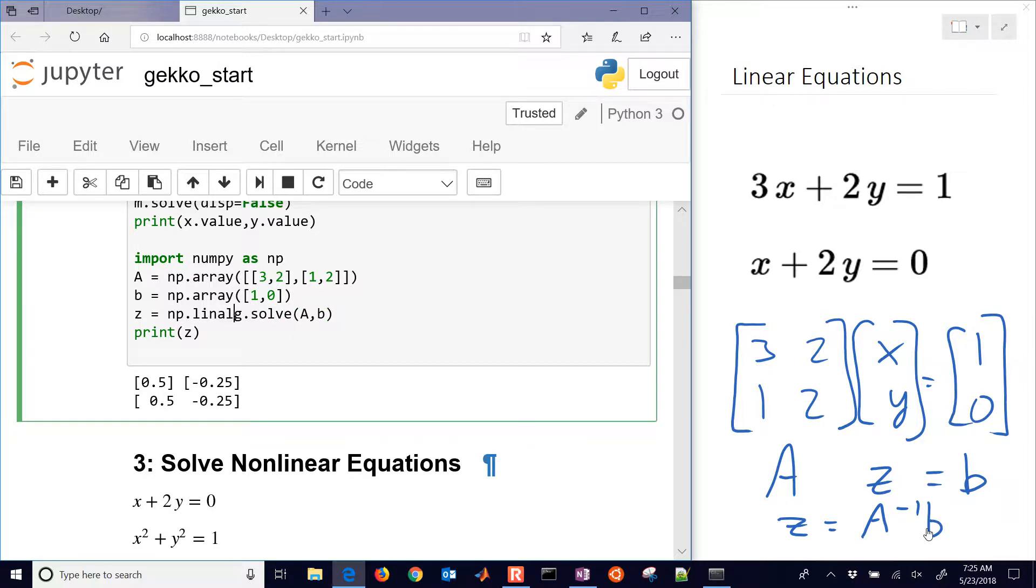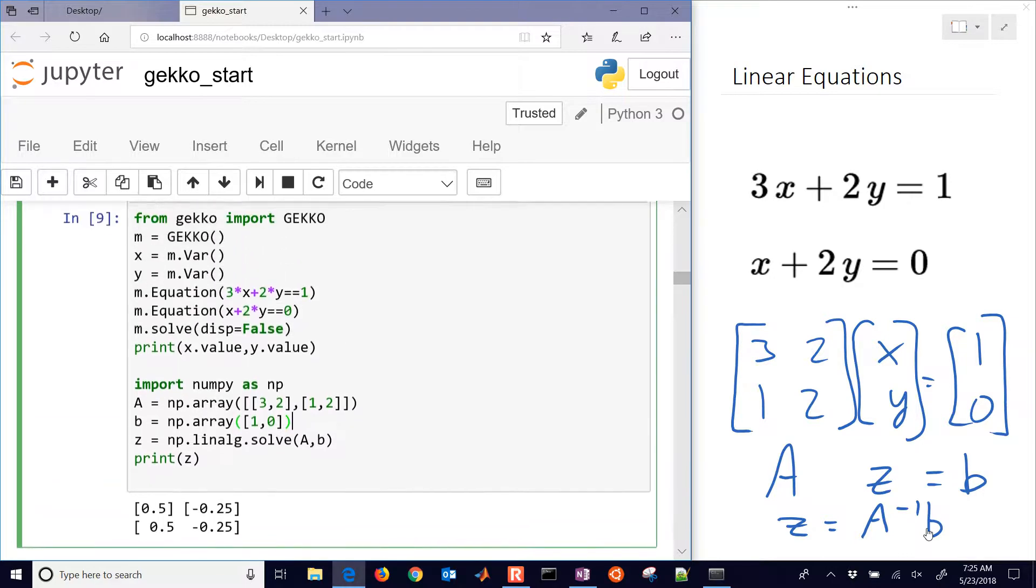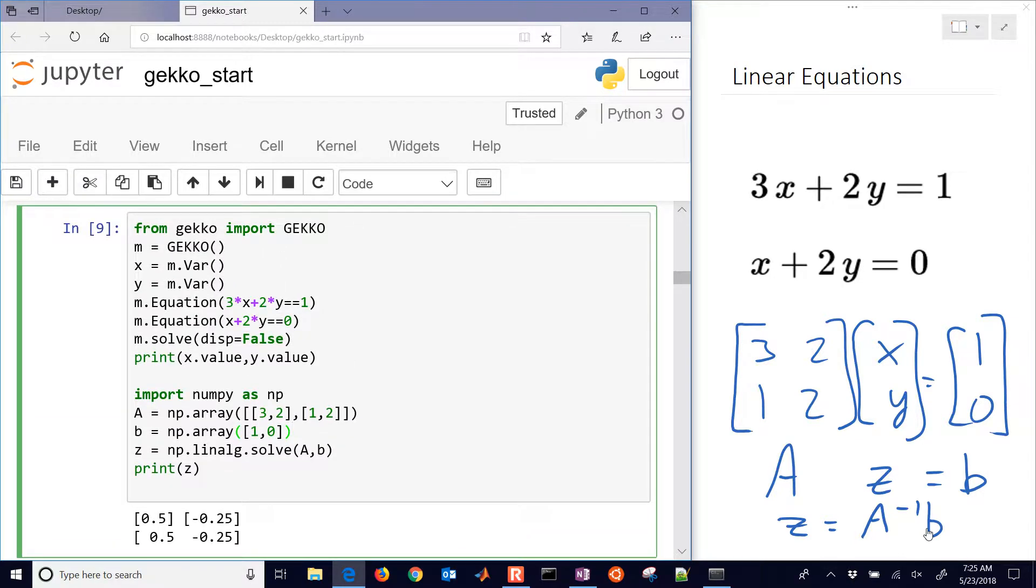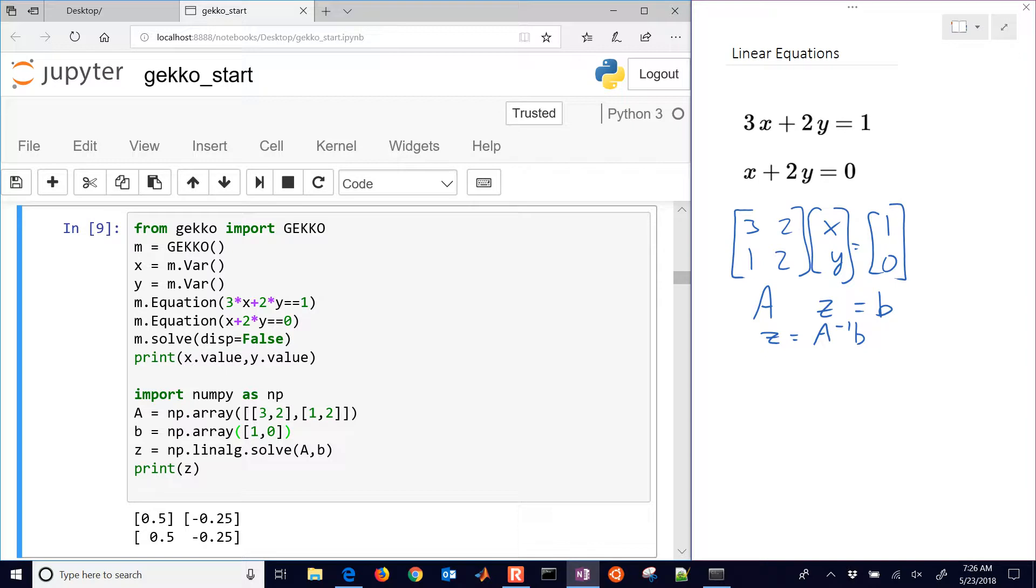I can also take other approaches as well. There's many other approaches in Python, but these are just two simple approaches using Gecko and the lin-alge solve. If I wanted to interpret this graphically, I would have something like this linear set of equations. And if I want to just plot it graphically, it's where these two lines intersect.